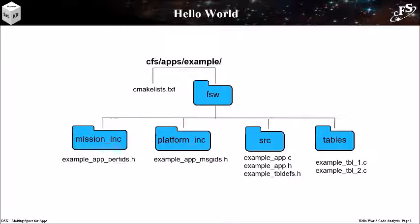This slide shows the flight software directories and source code files for the Hello World app that was named 'example'. The example directory was created in the cfs/apps directory. The CMakeLists.txt file contains definitions used by the cmake system to build the app. The cFS build system is covered in a separate tutorial. The flight software directory contains four sub-directories.